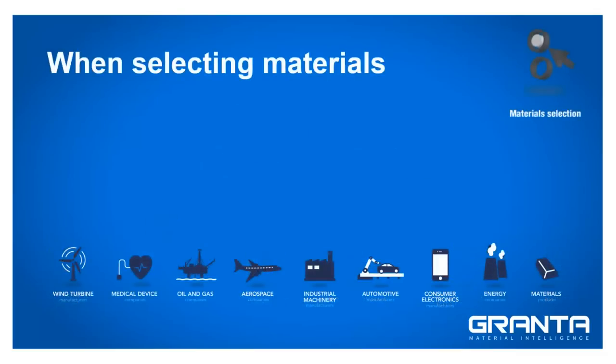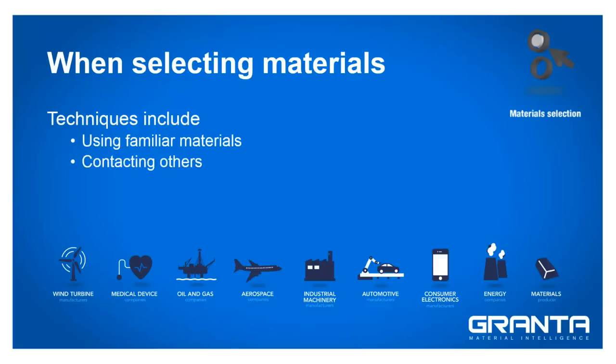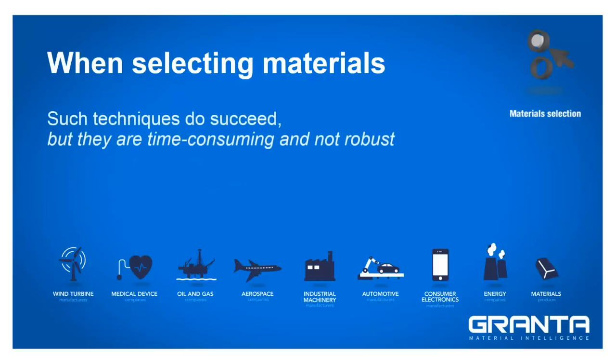When selecting materials, engineers employ a number of techniques, including using a material they've used before or are familiar with, contacting a material supplier, colleague or consultant, and searching journals and the web for expert articles. Such techniques do succeed, but they are time-consuming and not robust.